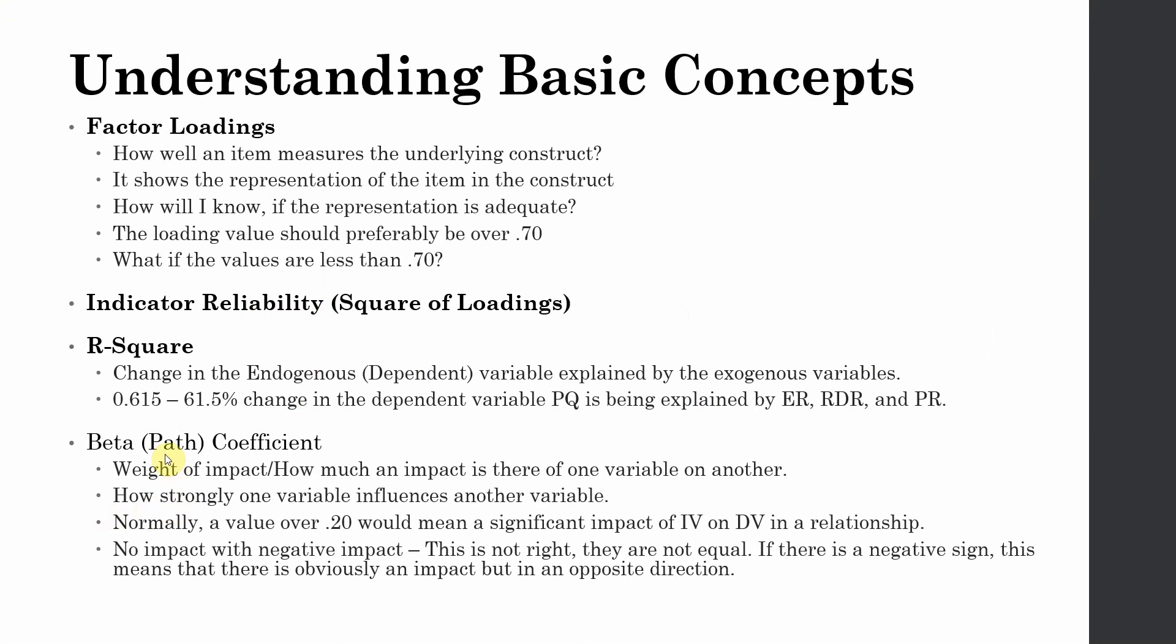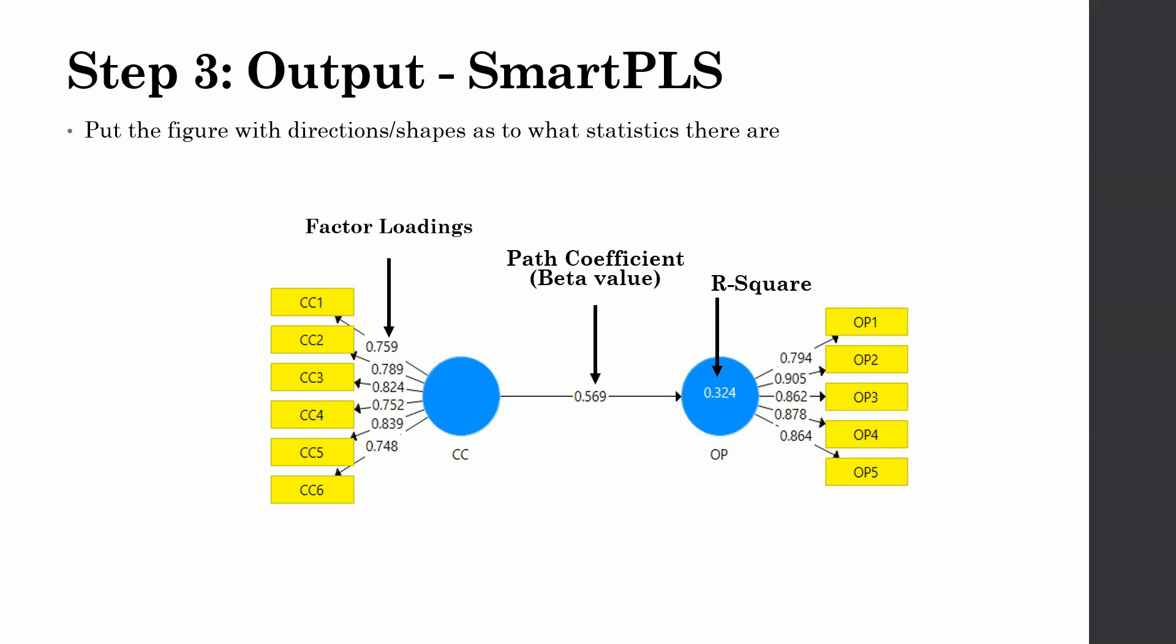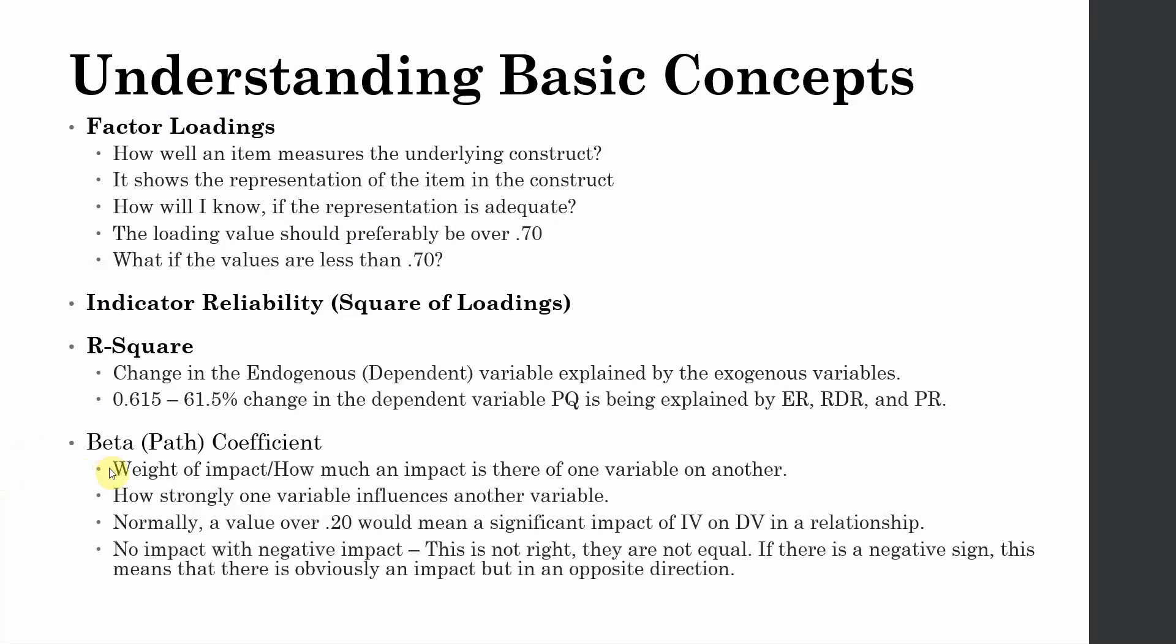Next up is beta or path coefficients. Now where is your beta? Here is your beta, 0.569 in this case. That is your beta value or path coefficient. It is the weight of impact or how much an impact is there of one variable on the other. It also shows how strongly one variable influences another variable. Normally a value over 0.20 would mean a significant impact of IV on DV in a relationship.